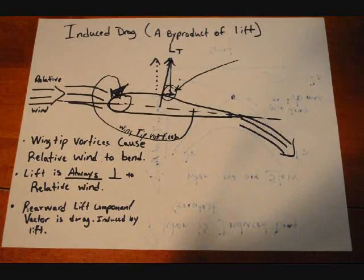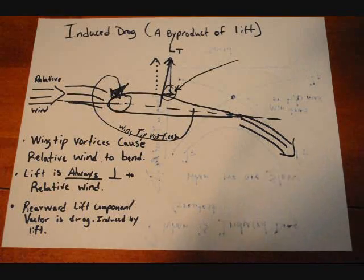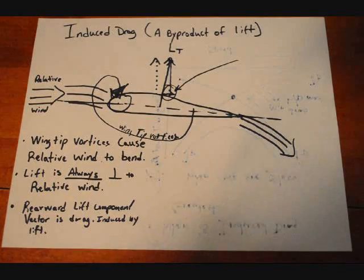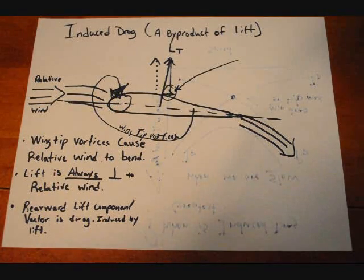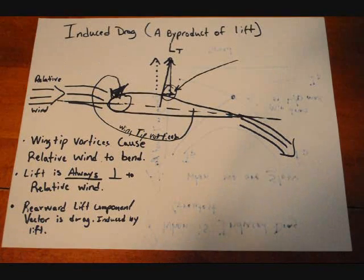Real important thing, I'm going to say it again, real important thing to remember is wing tip vortices are causing the relative wind to bend downward as it flows over the wing, as it approaches the wing, and that bending of the relative wind causes the lift to be shifted aft slightly. That's because lift is always perpendicular to relative wind.